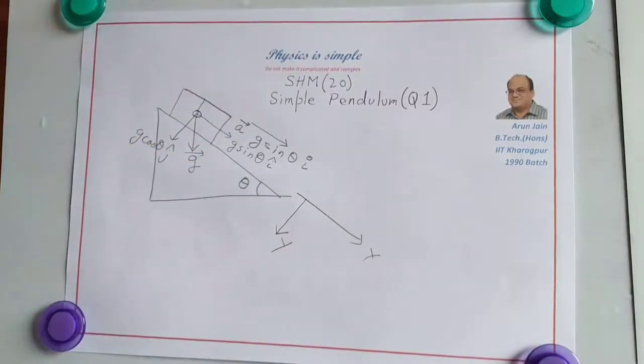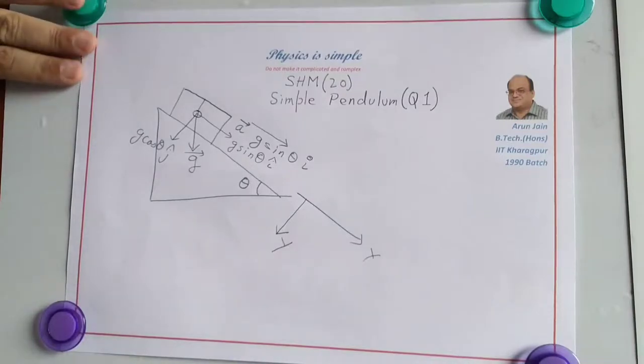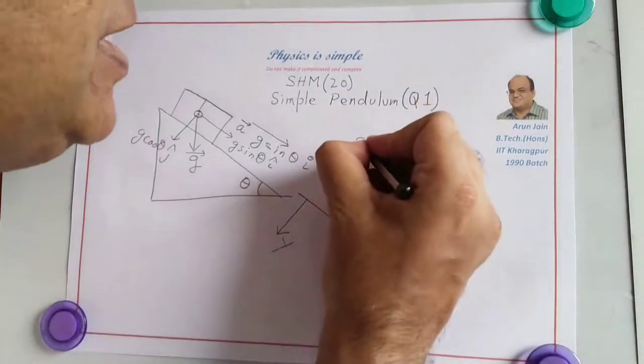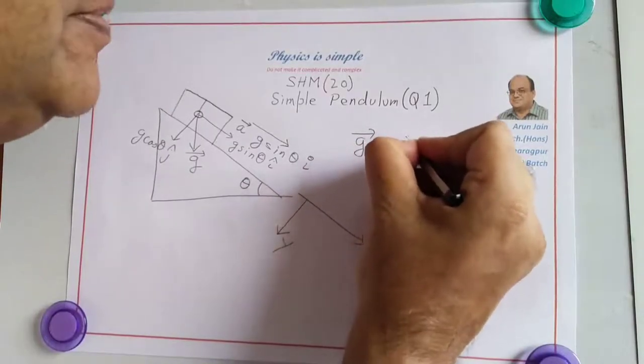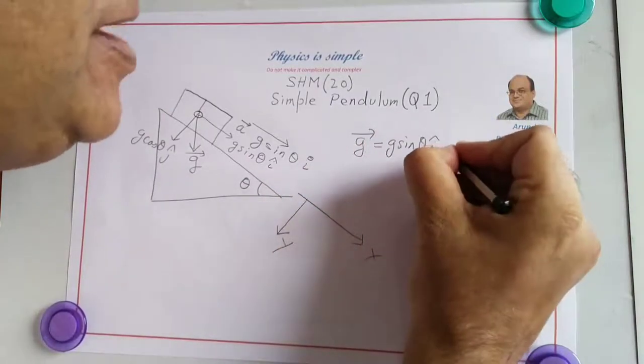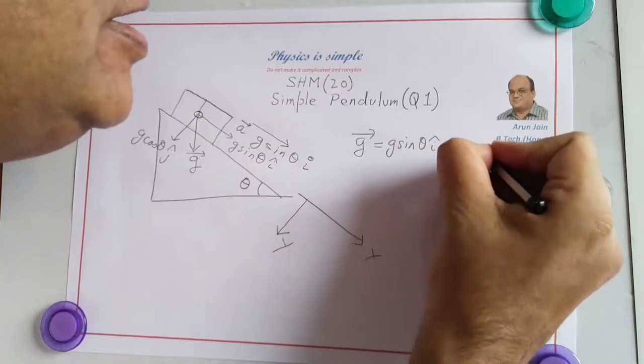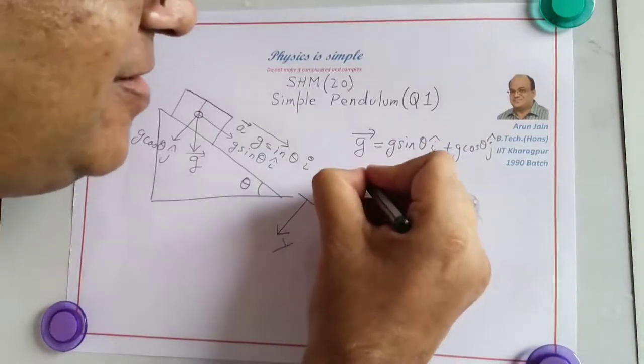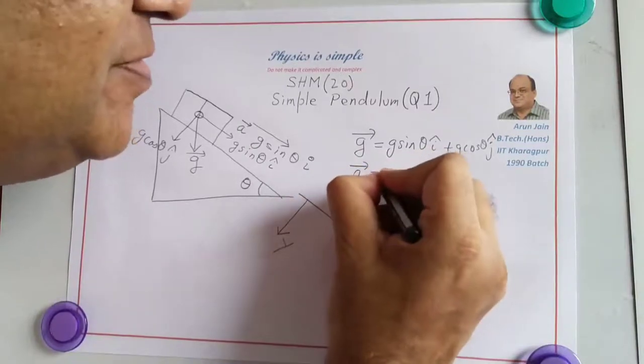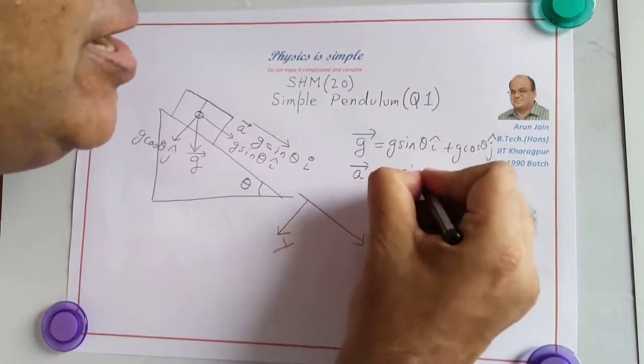Therefore, G becomes equal to G sine theta i-cap, plus G cos theta j-cap. And the acceleration of the vehicle becomes G sine theta i-cap.